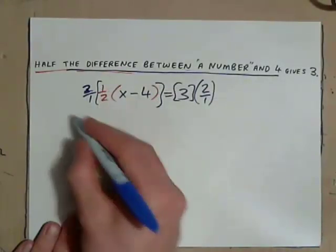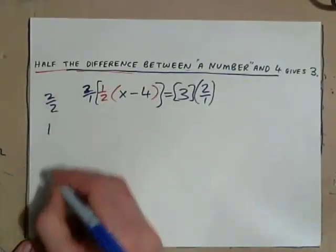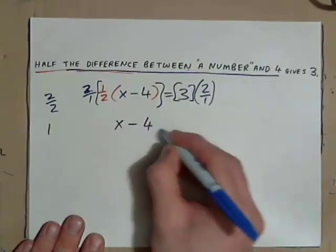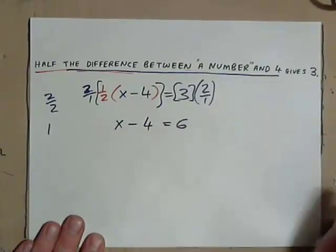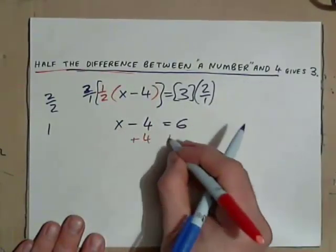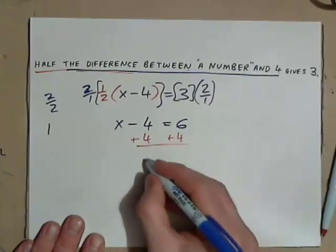So, you have 1 times that, or just x minus 4, equals 3 times 2 is 6. Add 4 to both sides, and we have x is 10. So, let's check that.